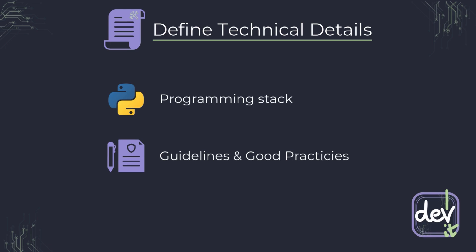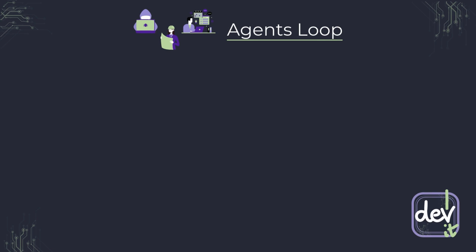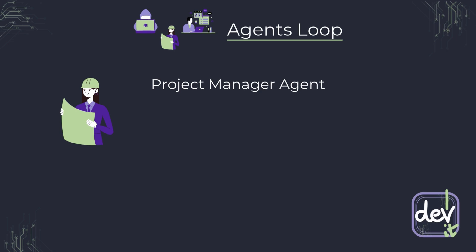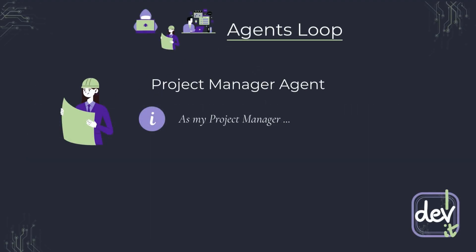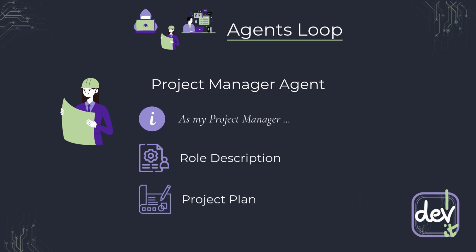We have our project plan and technical guidelines — now it's time to unleash our AI agents. We're going to simulate a real software development team, with AI doing the heavy lifting. I created documents describing the goal of each role; all documents are in the repository. The project manager is responsible for taking our high-level goals from the project plan and turning them into actionable tasks. Here is the prompt to trigger the PM agent — we explicitly tell it 'you are the project manager,' which helps the AI stay in character and produce relevant output. We give it the overall task goal and general instructions for how the task should look, along with the role description and project plan attached to each prompt. The project manager reviews the plan, generates a feature request, ensures the goal is clear, and provides a high-level description.